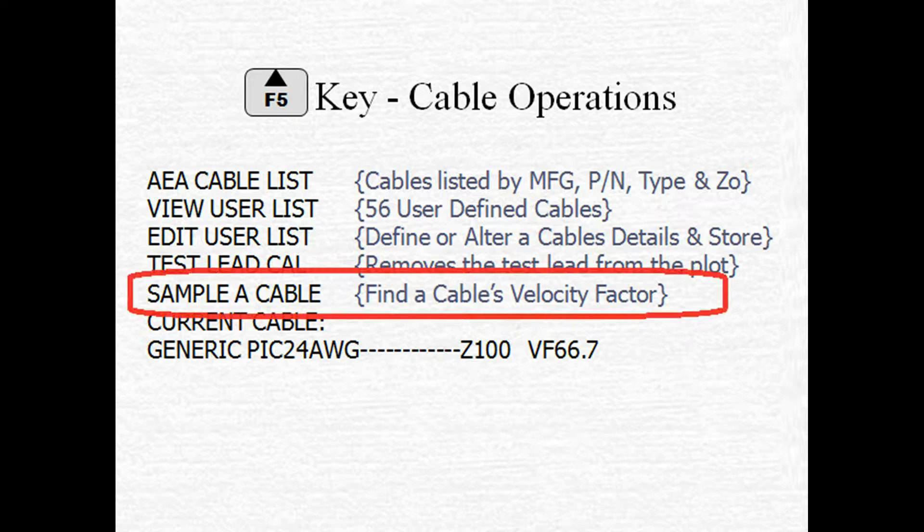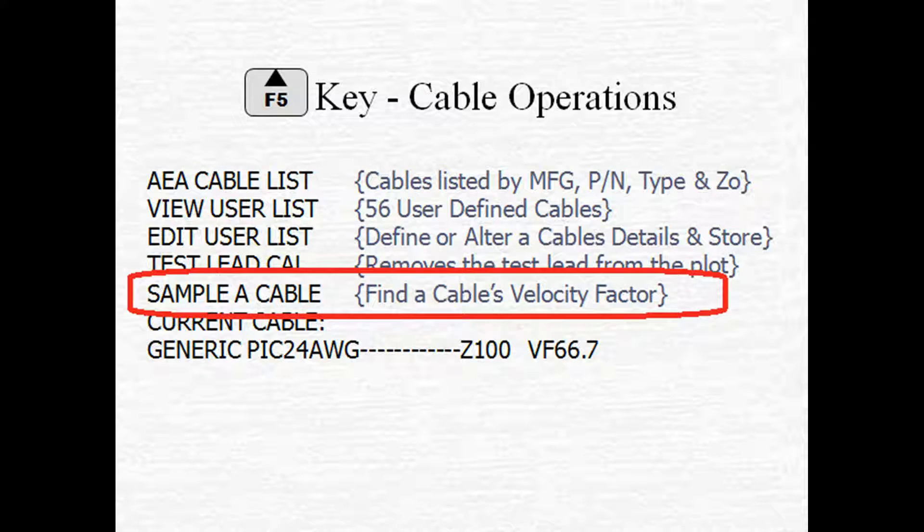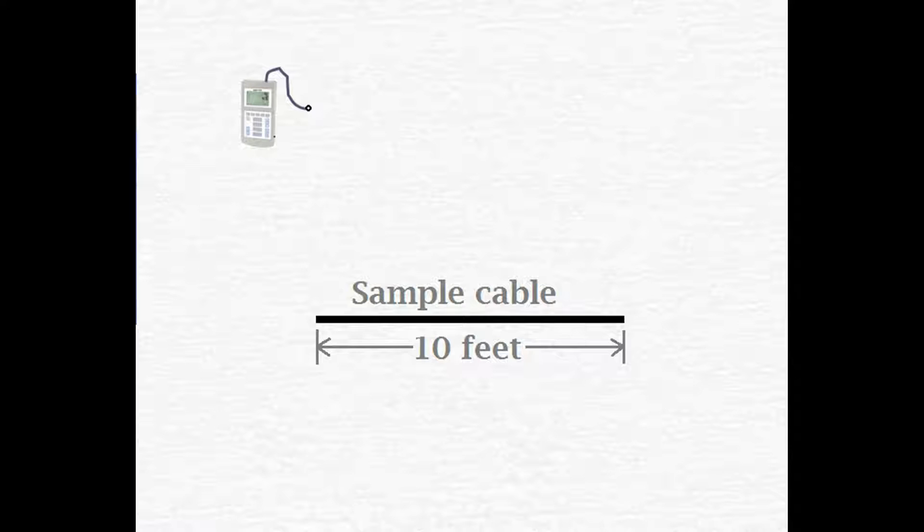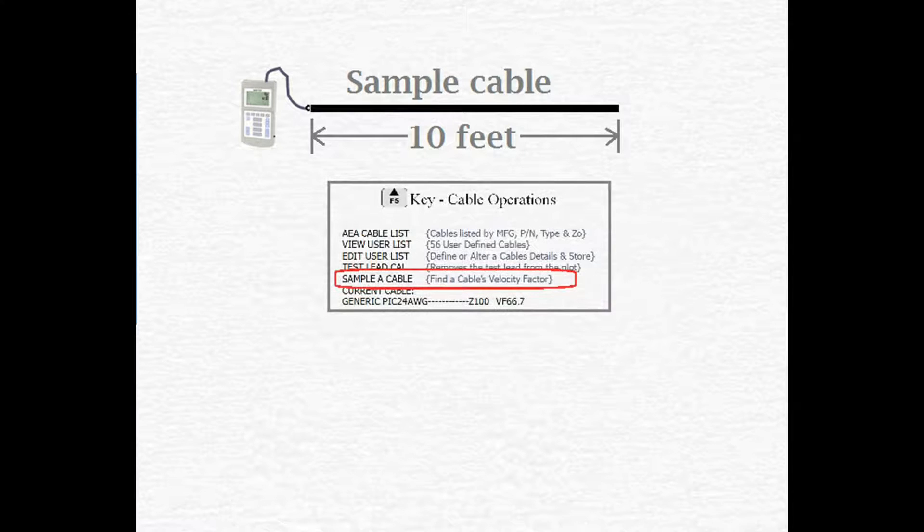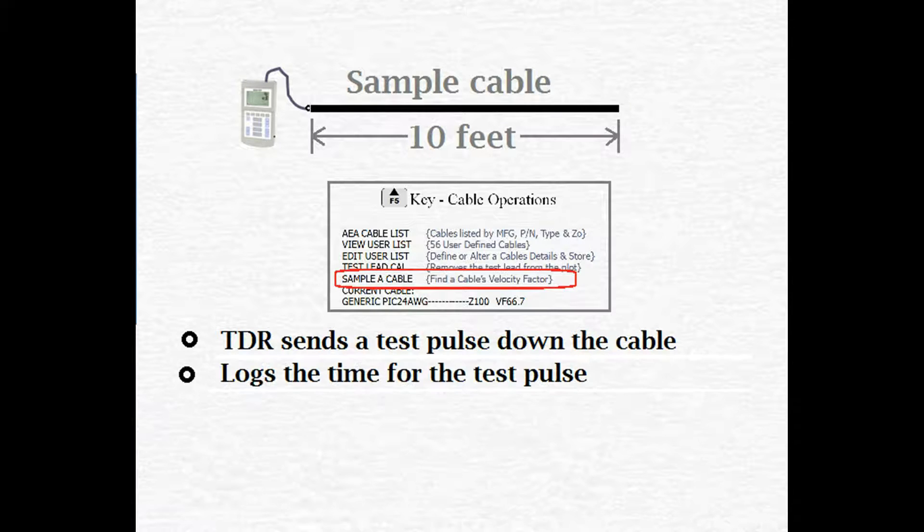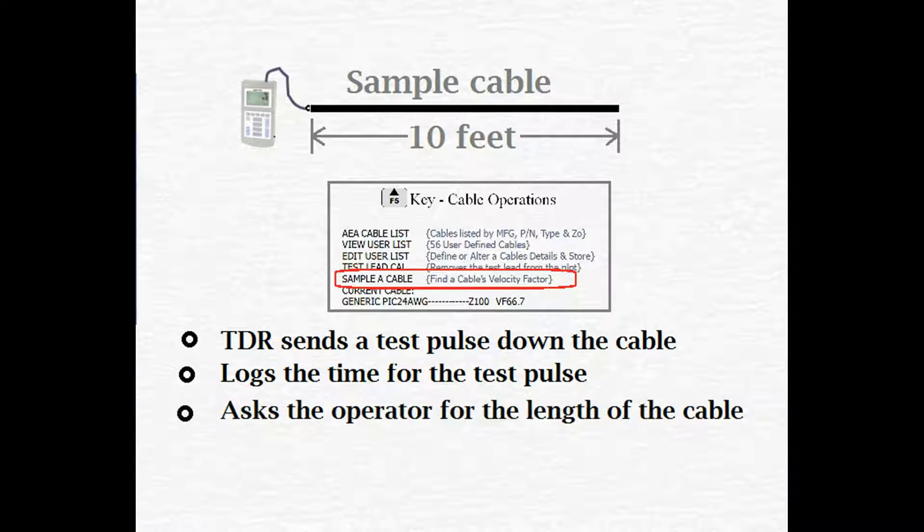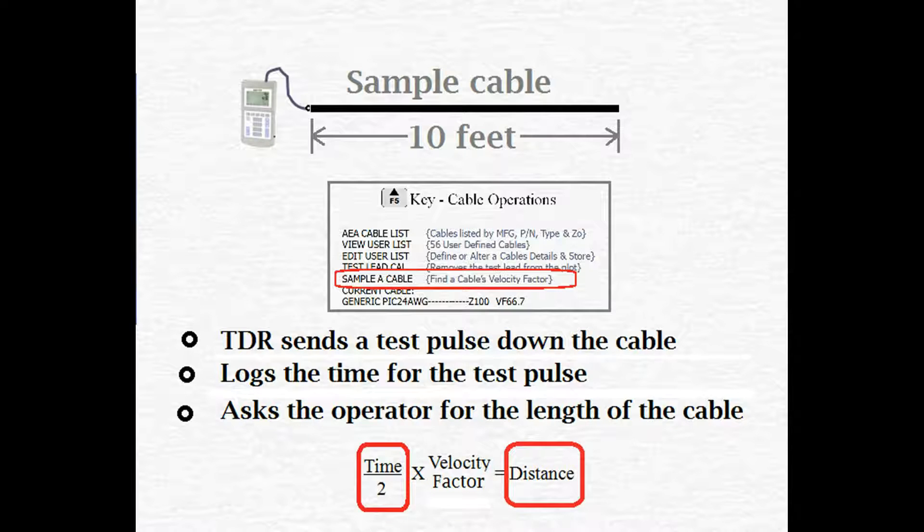A more accurate way of finding velocity factor is to run a test on a sample piece of cable. So take a piece of cable of the same type that you'll be testing and measure its length exactly down to the inch. Hook your TDR up to the sample cable. Then tell the TDR to sample it. The TDR will send a pulse down the cable. It'll log the time it took for that test pulse to return. Then it'll ask the operator how long the cable is. So now we can head back to our formula. The TDR has the time information it needs. The operator provided the distance information. Now the TDR has everything it needs to reverse engineer this formula and come up with a velocity factor. Which it will display to the operator on the screen.